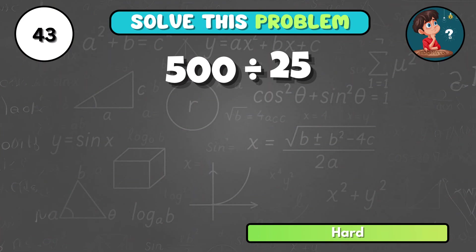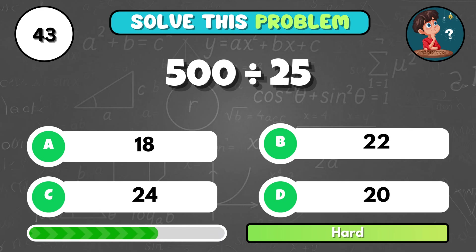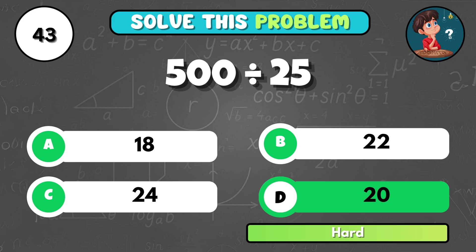Can you work out 500 divided by 25? It equals D, 20.